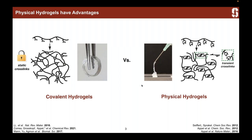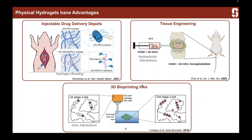There have been several uses of these different physical hydrogels, which can be formed through many different chemistries. Here are a few examples: a gel formed through hydrogen bonding, a gel formed through hydrophobic interactions — this was a hyaluronic acid/methyl cellulose mixture — and finally, gels formed through ionic interactions. These different gels were all used for various applications, ranging from drug delivery to tissue engineering to bioprinting.